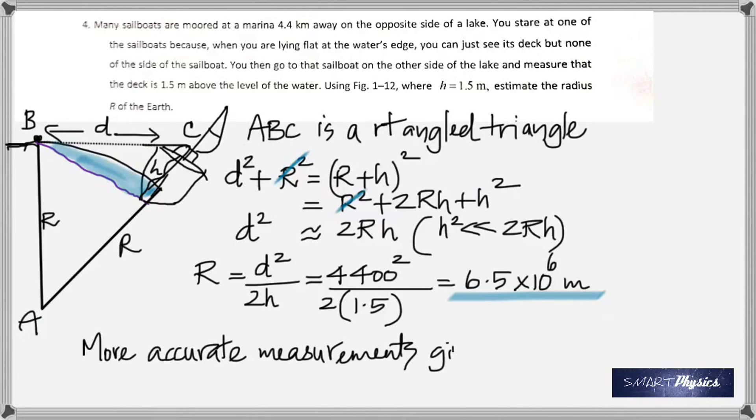Now, this is an approximate calculation. And more accurate calculations give the radius of the Earth as 6.38 times 10 to the 6 meter. Now, for such an approximate method of calculation, that is not at all bad.